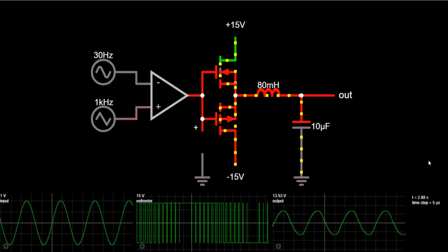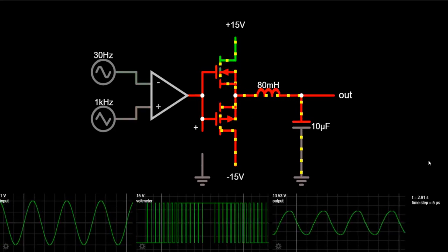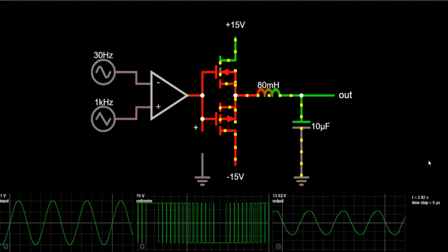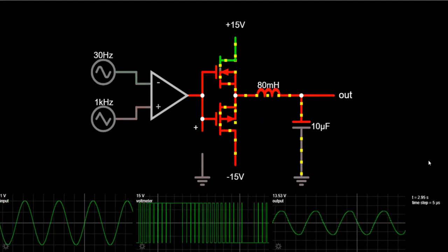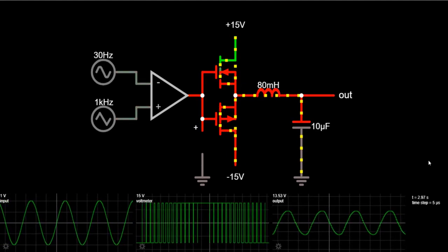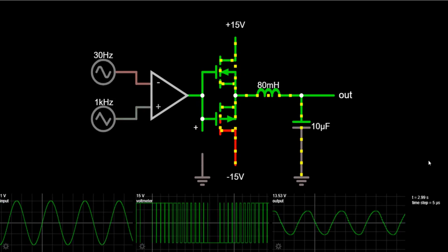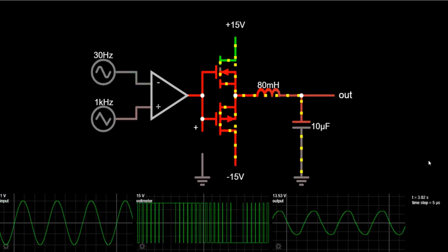This is because of biasing elements and the linear operation of the output transistors. Actually, a class D amplifier is also known as a switching amplifier. It is an electronic amplifier in which the amplifying devices—the transistors—operate as electronic switches.